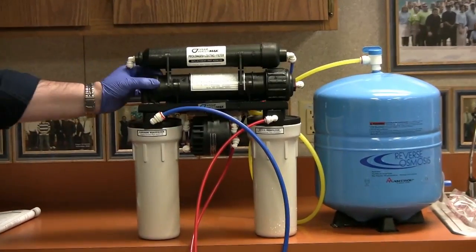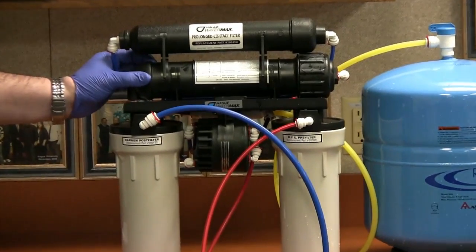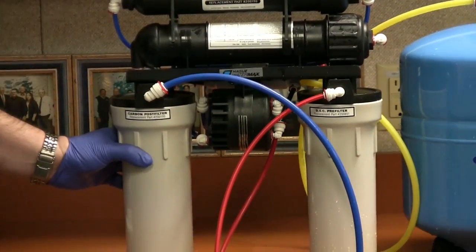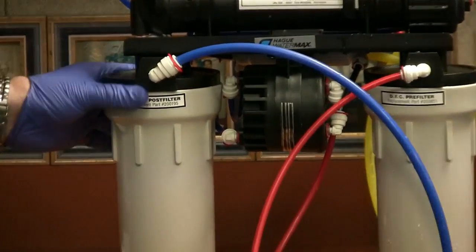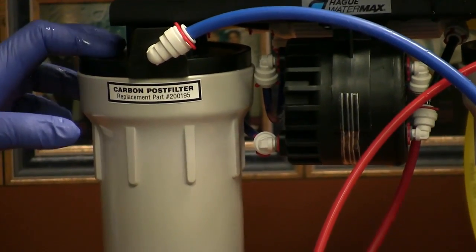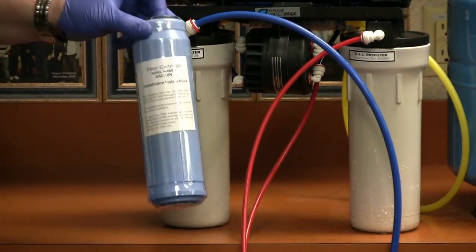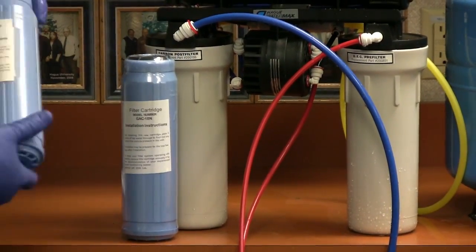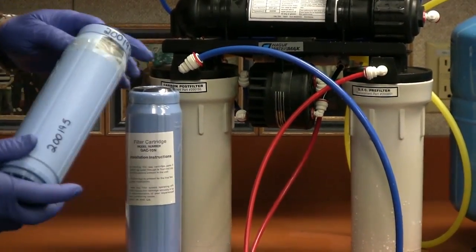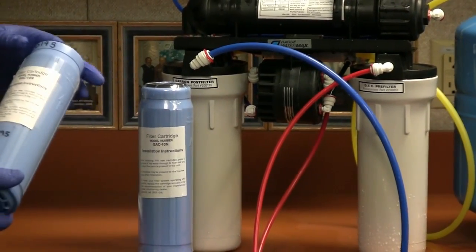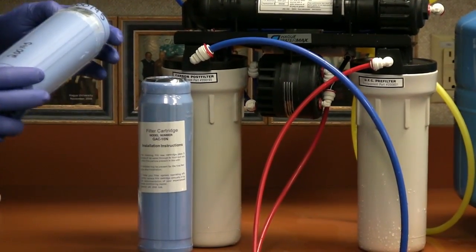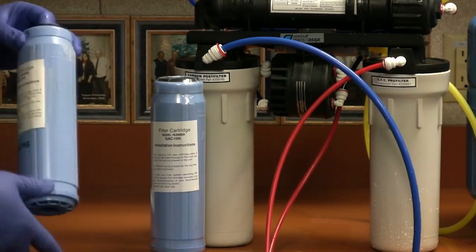If your higher TDS isn't from the membrane, it could possibly be from the carbon post filter. If you've just recently done a filter change, the cartridge that's in the carbon post filter is just a GAC carbon cartridge. It's filled with granular activated carbon. This carbon typically has a lot of fines and dust.